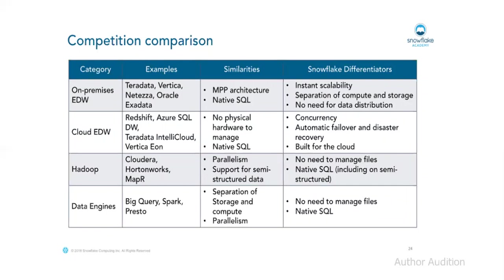Comparing with cloud enterprise data warehouses like Redshift and Azure SQL: similarities include no physical hardware and native SQL support. Snowflake differs in concurrency — it has multi-cluster capability to serve data to users uninterruptedly. Also, automatic failover and disaster recovery are advantages: Snowflake maintains three replicas of your original data for automatic recovery. Even if a developer accidentally drops a table, data can be recovered using time travel.